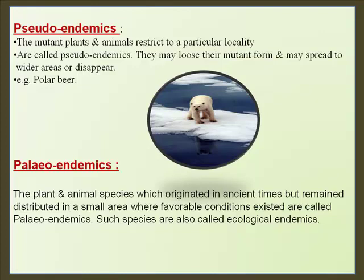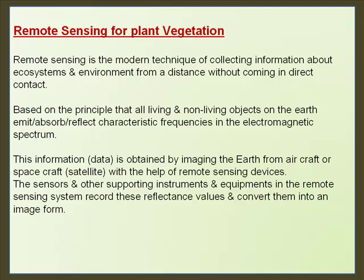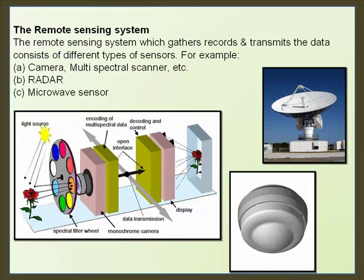Remote sensing is the modern technique of collecting information about ecosystems and environment from a distance without direct contact. It is based on the principle that all living and non-living objects on earth emit, absorb, or reflect characteristic frequencies in their electromagnetic spectrum. Data is obtained by imaging the earth from aircraft or spacecraft using remote sensing devices. The remote sensing system gathers, records, and transmits data using sensors such as cameras, multi-spectral scanners, radar, and microwave sensors.